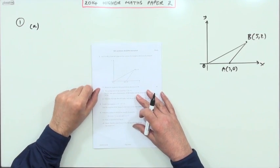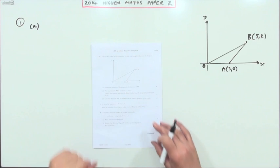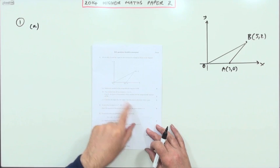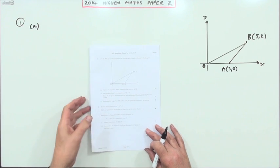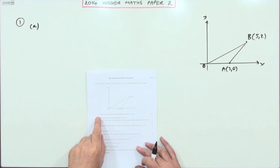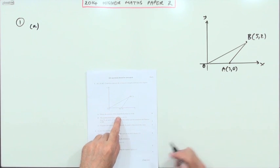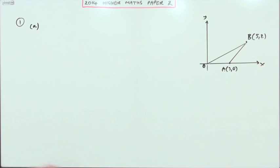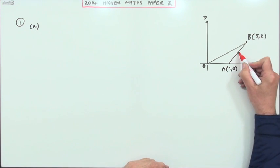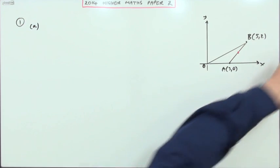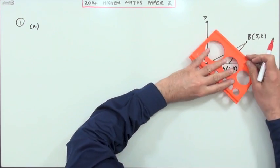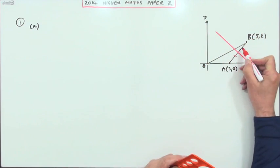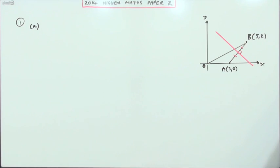Number one, the first question in paper two of the 2014 higher maths: lines, intersection of lines, and angles. First, part A: obtain the equation of the perpendicular bisector of AB. So what's the line that bisects it at right angles? Putting that in roughly, it'll be a line something like this, bisects it at right angles.